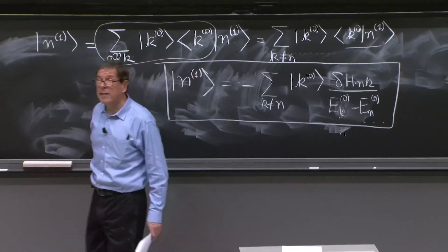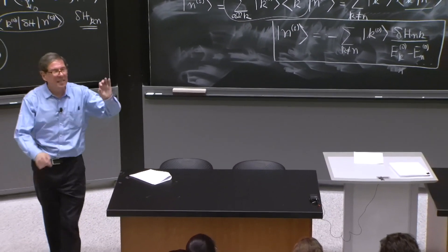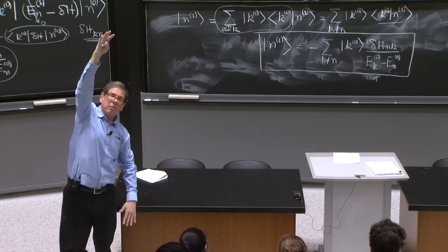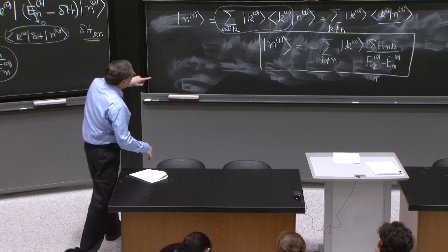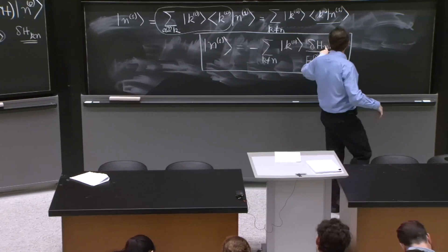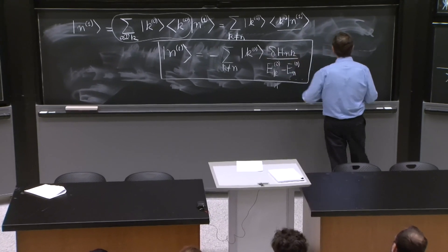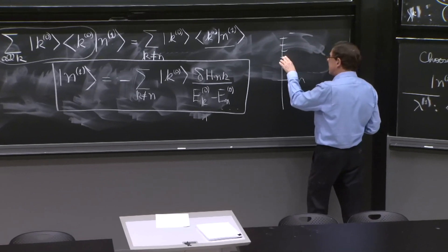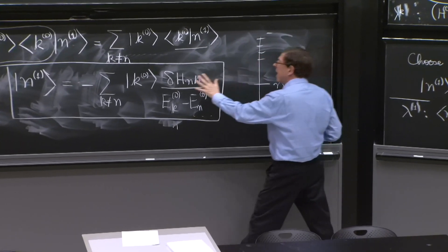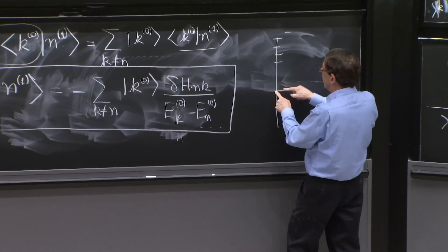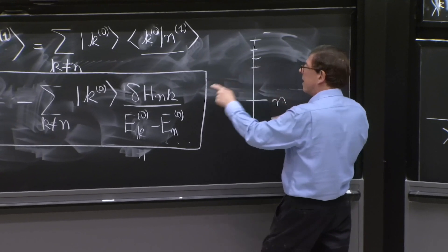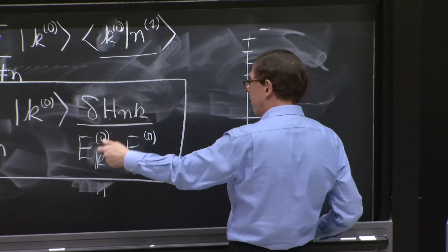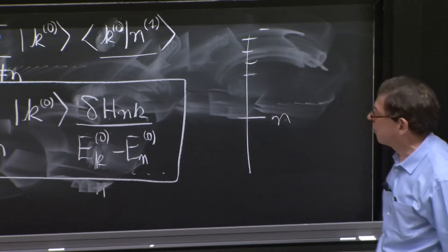So the state n1 is a complicated correction. It gets a little component from every other state of the spectrum. And the coefficient depends on the matrix element of your state with the state you are contributing with. So you have the state n here and all the other states here. The amount of this state k that enters into the correction is proportional to the matrix element between n and k. If the matrix element is zero, that state does not contribute here. And then there is the energy denominator as well.